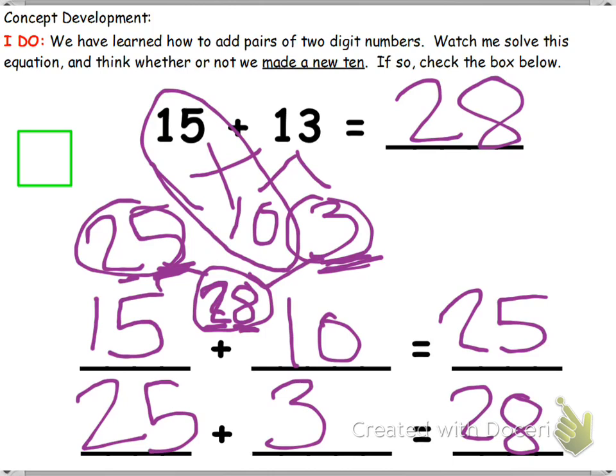But if we did make a new 10, then we would have checked that box. So if it had been 15 plus 15, well, 5 and 5 does make 10, so we would have made a new 10. That's when we would have checked the box.